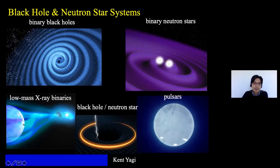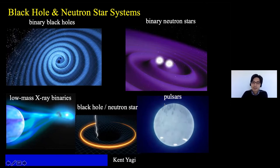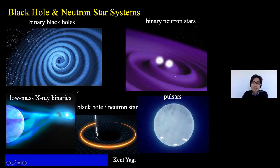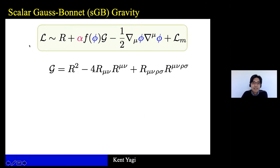For example, there is a system where a main sequence star has a black hole companion forming a binary system, with some accretion to the black hole forming an accretion disk and X-ray emission. There are also pulsars measured by radio telescopes and X-ray telescopes like NICER, which have measured the compactness of neutron stars. So I'm going to explain how we can use these black hole and neutron star observations to probe gravity, focusing on one class of modified theory of gravity: scalar Gauss-Bonnet gravity.